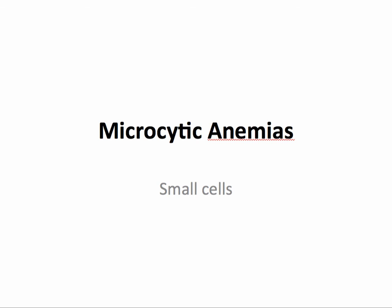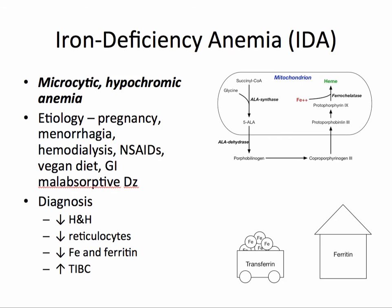We'll begin by discussing the microcytic anemias — these are forms of anemia with a mean corpuscular volume less than 80. Iron deficiency anemia is likely the most common. It is a microcytic, hypochromic anemia.